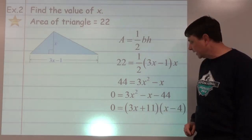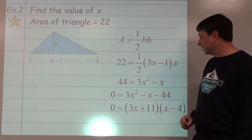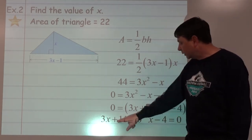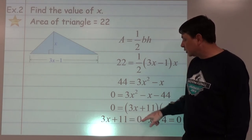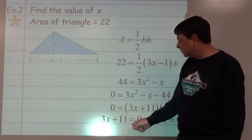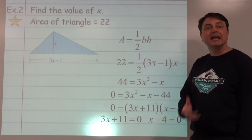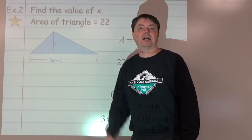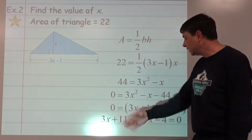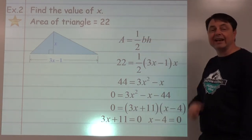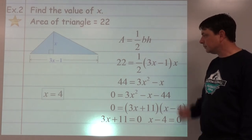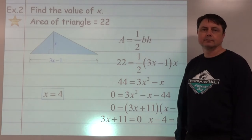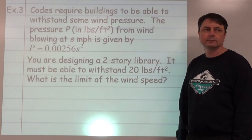We would subtract 11 on both sides, divide by 3, so x would be negative 11 thirds. I don't think that's really possible. You can't have a height of negative 11 thirds. You can't have height that's negative at all, so we can throw that one away. Solve this one: we're going to get x equals 4. That's our solution.